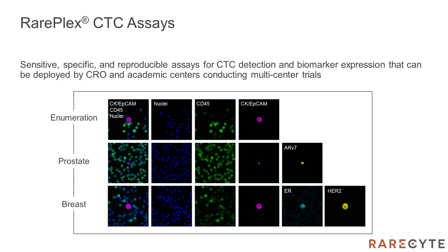Here are a few examples of clinical CTCs found with our assays, showing our standard approach to detection of epithelial CTC as nucleated events with CK and/or EPCAM expression that also lacks CD45. The middle row shows an ARV7 positive prostate cancer cell revealed with our prostate assay, and in the bottom row you can see a HER2 ER positive CTC identified using our breast cancer assay, highlighting the biomarker flexibility afforded by the RarePlex assay system.